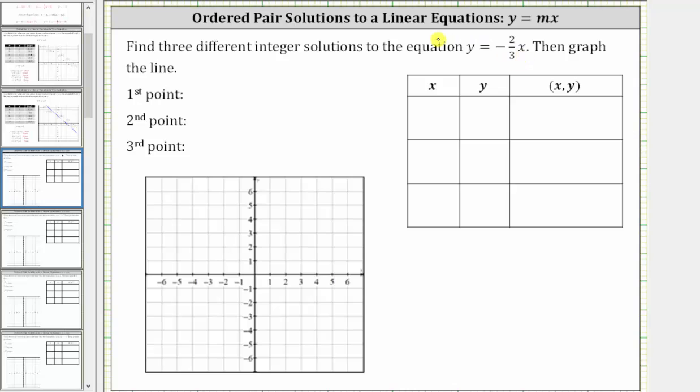However, we only want integer solutions and since we have y equals negative 2/3 times x, we will select x values that are multiples of the denominator, or in this case multiples of three. And that way the y values will also be integers.